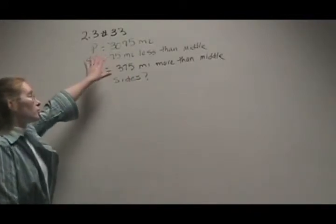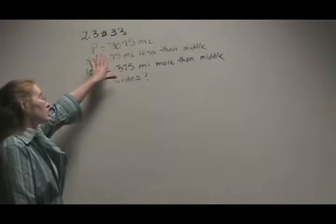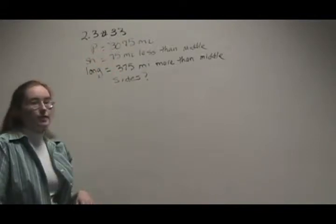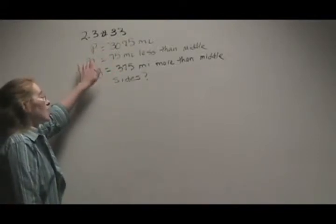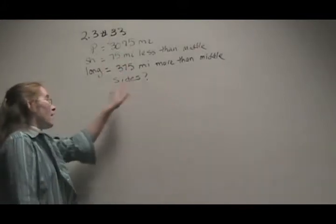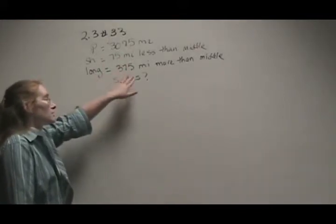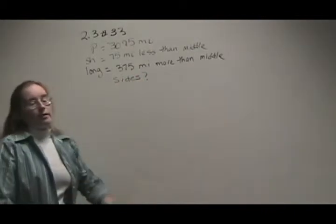Now, we're told that the perimeter of the Bermuda Triangle is 3,075 miles, and we're told that the shortest side is 75 miles less than the middle, and the longest side is 375 miles more than the middle.